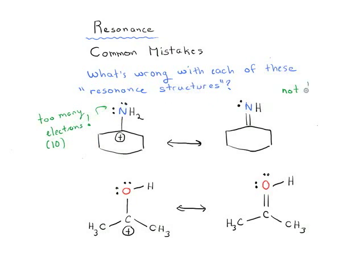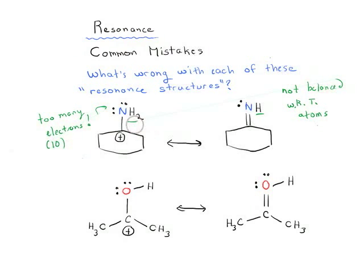The other thing is it's also not balanced — notice there are two hydrogens on this side and one on the other, so it's not balanced with respect to atoms. To make this legal, we could either remove a hydrogen or remove a lone pair. If we give nitrogen a negative charge, now we've got two lone pairs. One would come down to form our double bond, and then both sides would be neutral and balanced. Now we've got eight electrons around nitrogen on both the left and the right.